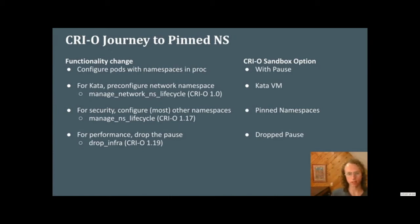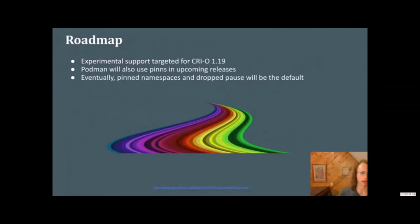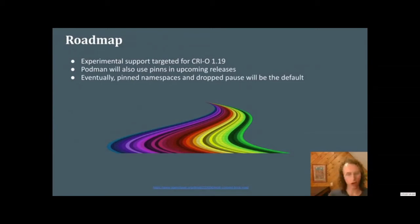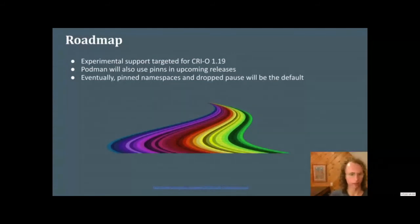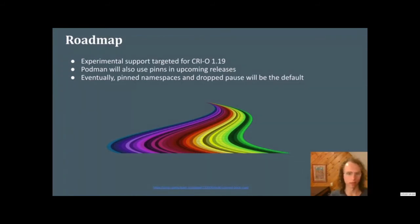Looking at the future: experimental support for dropping the pause container is targeted for CRI-O 1.19. After that, we plan on having Podman pods also use pinns to configure the namespaces, as it currently also uses an infra container. Eventually we want pinned namespaces and drop-pause to be the default, so that we get rid of the pause container entirely unless we absolutely need it.